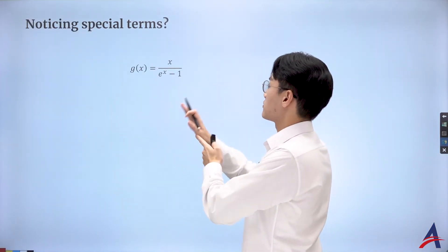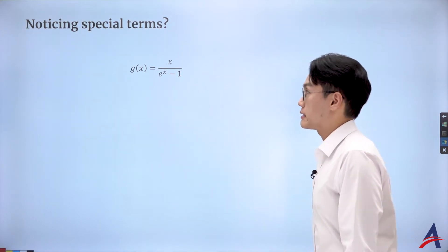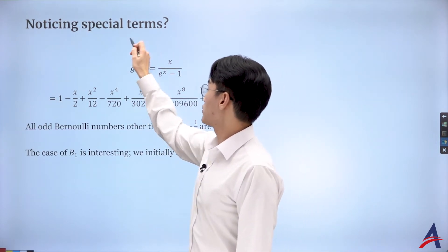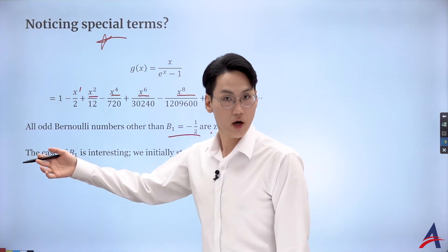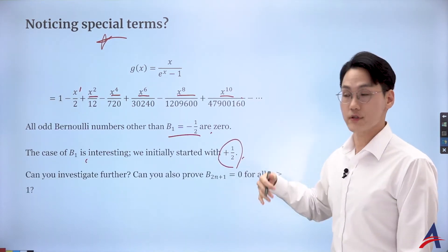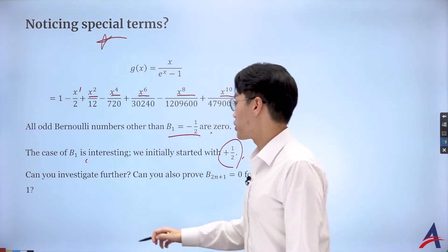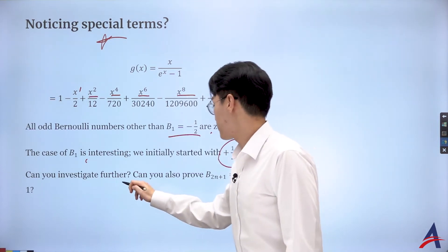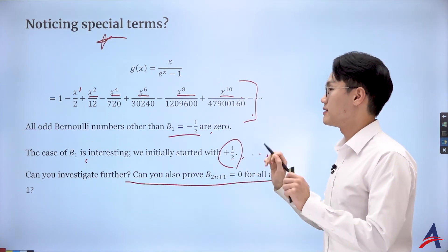So that is my new generating function for the Bernoulli numbers. We just checked that its nth derivative at zero gives the Bernoulli numbers, with b1 being negative one-half. Now, something notable: other than the linear term, I only have even-degree terms. That means the odd-degree terms always have zero coefficients. The case of b1 is again interesting — sometimes defined as positive one-half, sometimes negative one-half. You can investigate further for an IA. For up to the 10th term, all odd terms seem to be zero except for degree one; proving this remains zero for all odd cases is another great IA discussion.